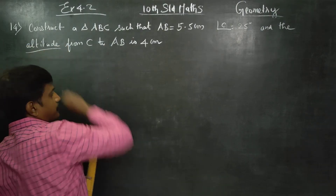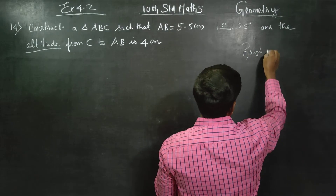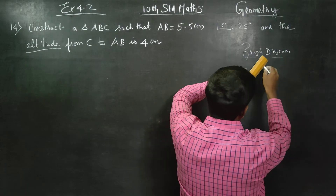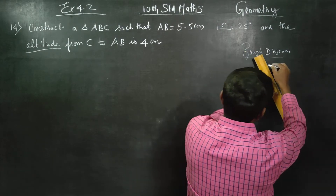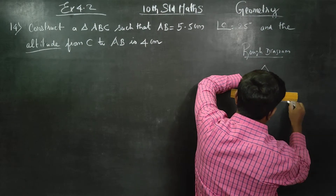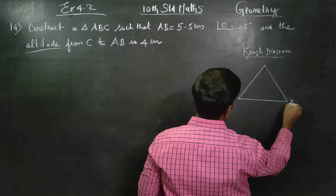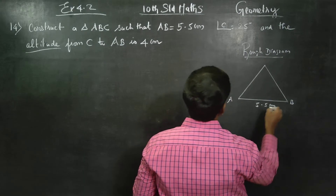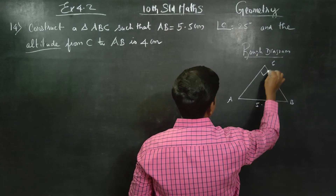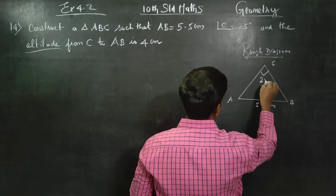The altitude makes this a tricky sum. First of all, draw the rough diagram. Draw a triangle of any measure. The base is 5.5 cm, and the vertical angle C is equal to 25 degrees.